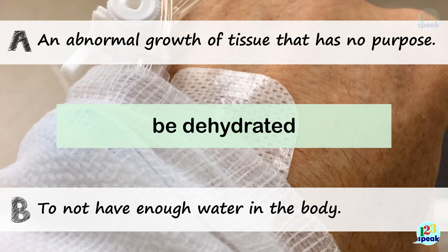Be dehydrated. A: An abnormal growth of tissue that has no purpose. B: To not have enough water in the body. The correct answer is B — 'To not have enough water in the body.'